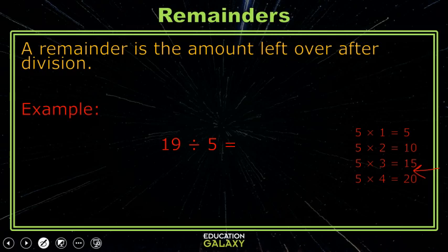It's going to be somewhere between 3 and 4. The biggest number that goes into 19 without passing it is 3. And it goes in 5 times, but that only gives us 15. That means there are 4 left over to get to 19, so our remainder is 4.